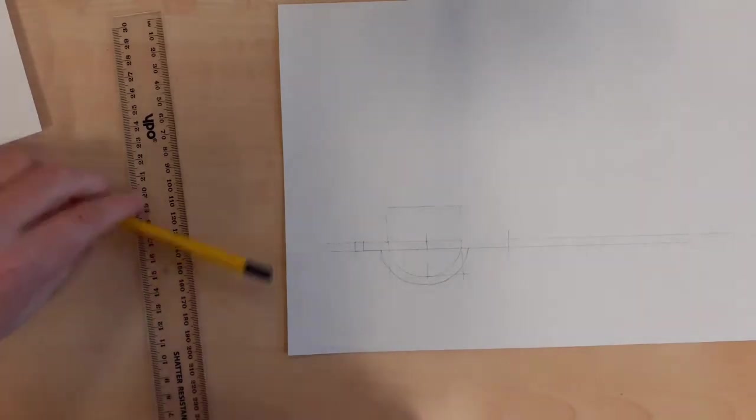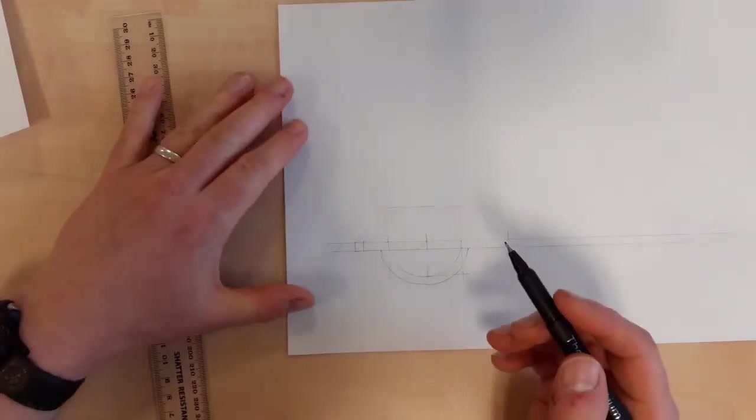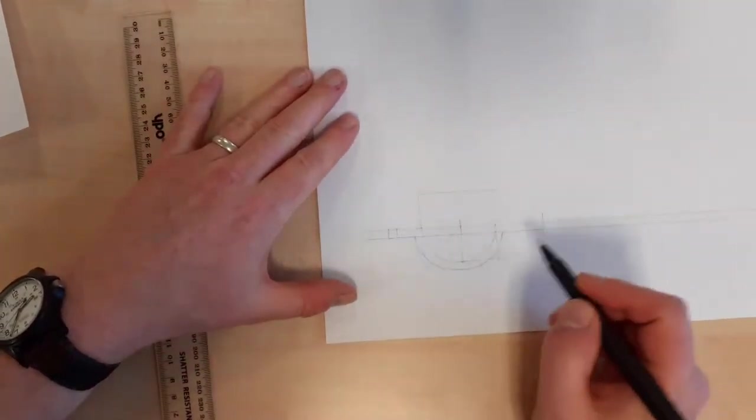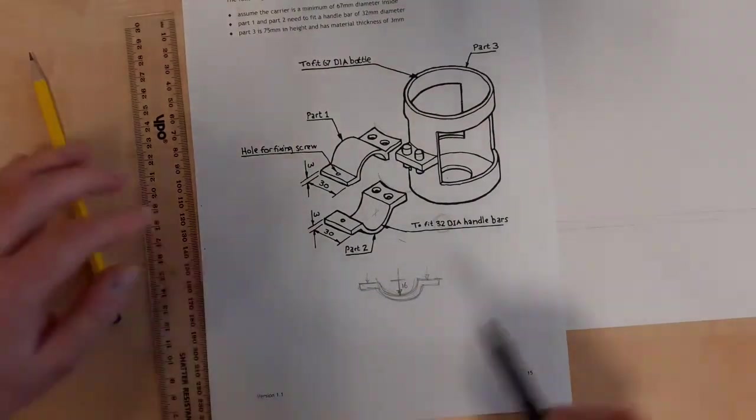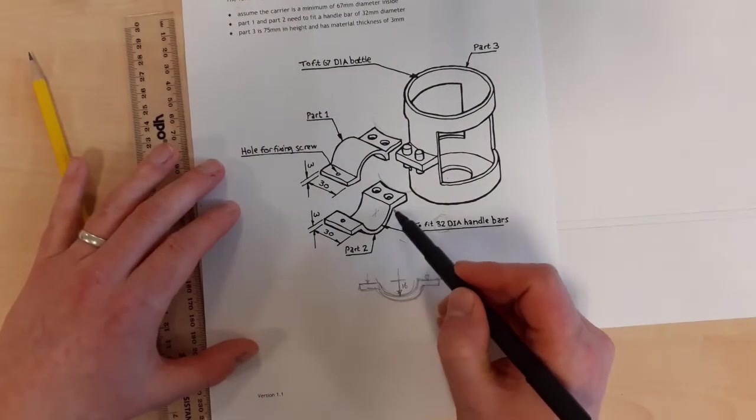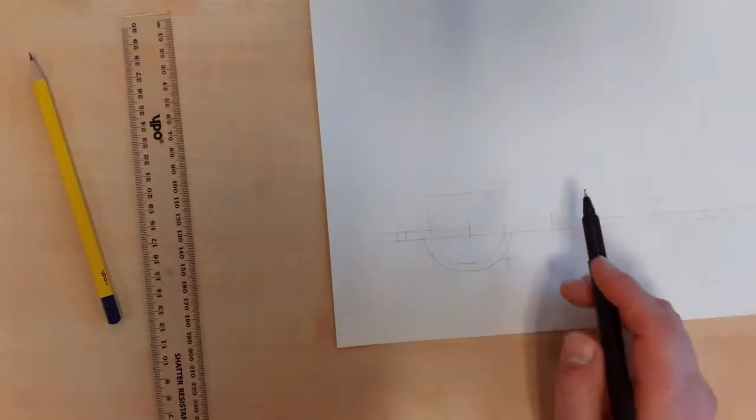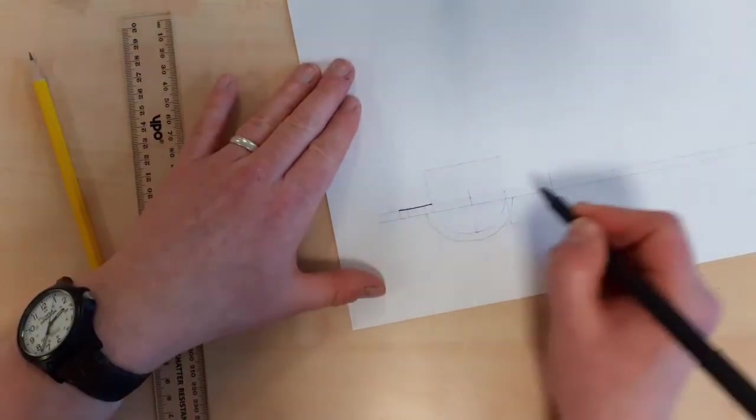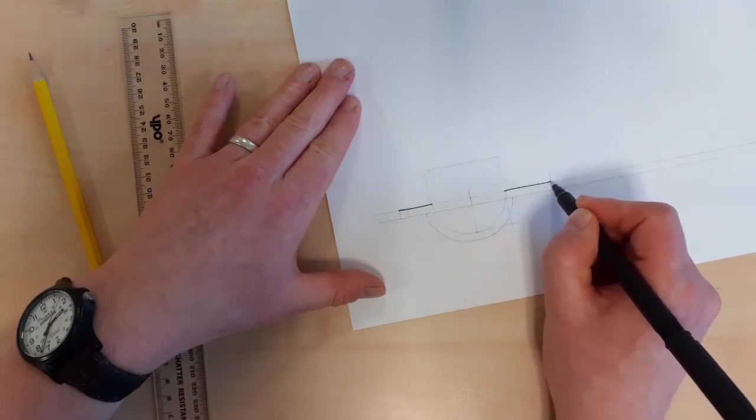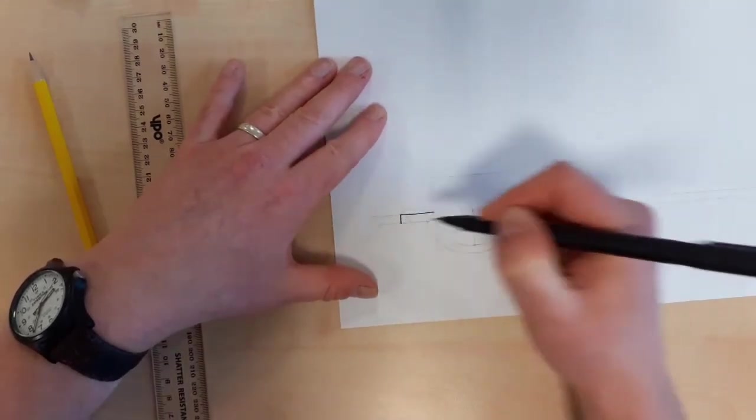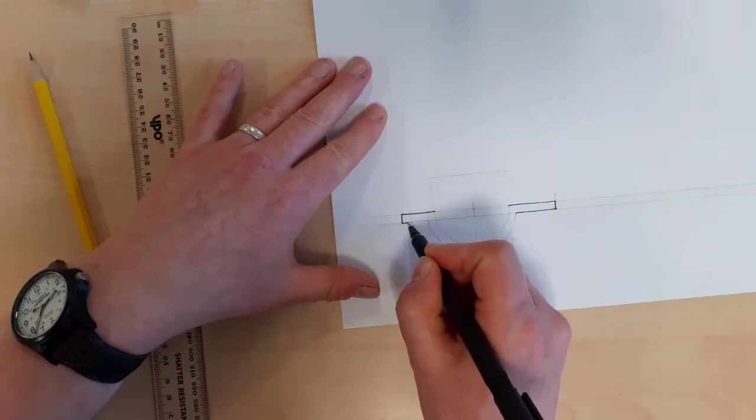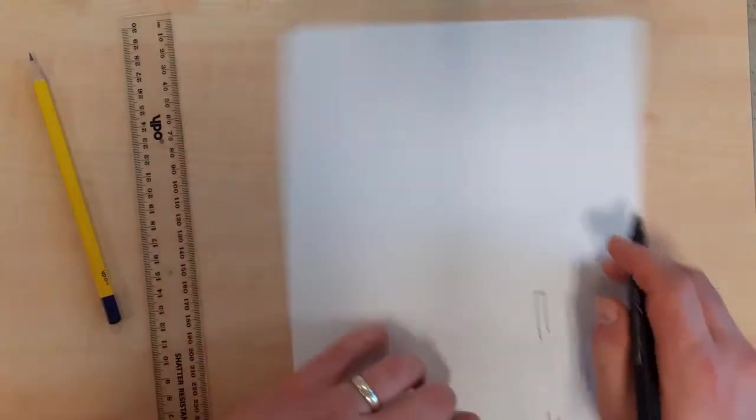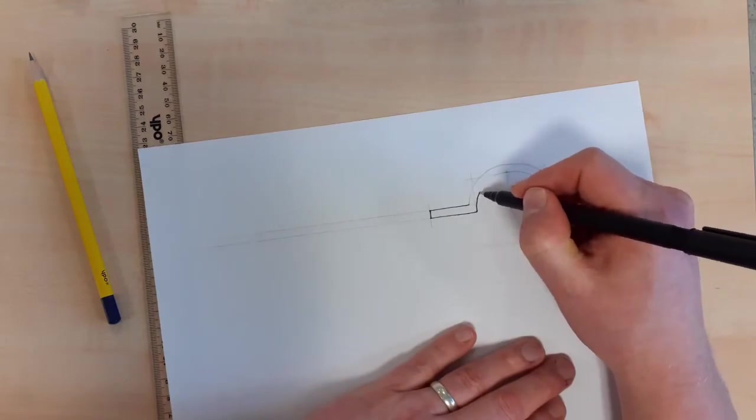You would then go darker with your pencil and turn some of these construction lines into visible lines. I'm going to use a pen just so it shows up on camera. But let's ask ourselves, what would be visible at this stage? We'd be able to see that whole surface at the front right there. If you're going to use a straight edge, my advice is use it for the construction lines, but when you come to do your outlines, do these freehand so that your drawing retains an element of hand-drawnness about it.